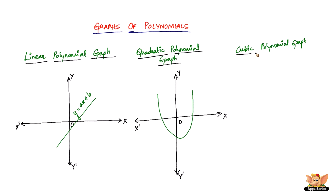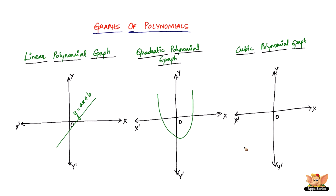The next one is the cubic polynomial graph. Again we have the y-axis and the x-axis. The kind of curve we get when we plot a cubic polynomial graph is this shape — it's a bit like a sideways S, or like the number 2, or the letter Z. So to summarize: the linear polynomial gives a straight line, the quadratic polynomial gives a U-shape, and the cubic polynomial gives this S-like curve.